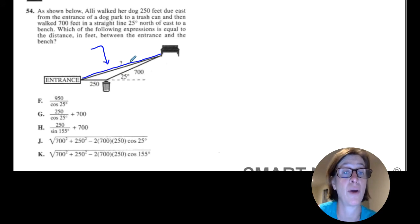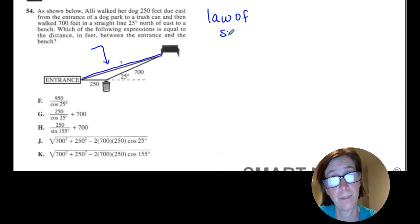So you cannot use SOHCAHTOA. In Algebra 2, possibly in geometry, you learned that if you want to find the length of a side in a triangle that is not right, you can use the law of sines or the law of cosines.